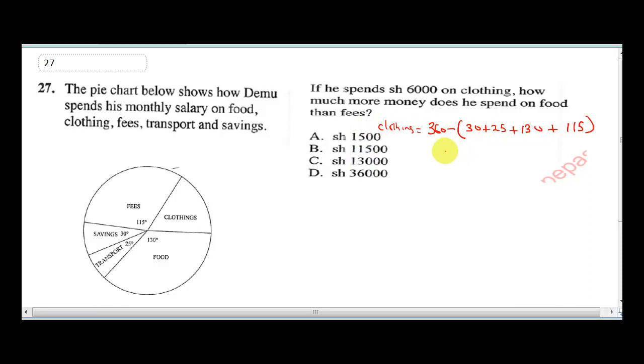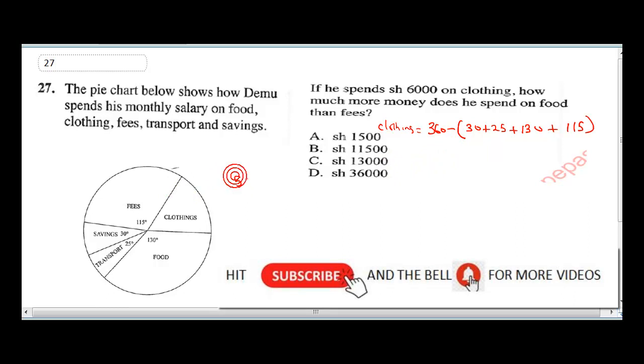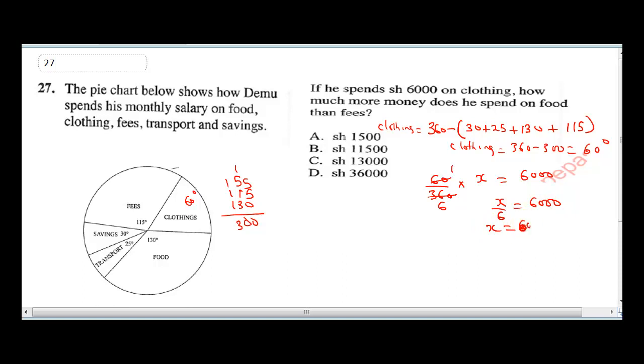So this will be 30 plus 25 gives us 55, plus 115 plus 130, this will be 300. So clothing alone will be 360 minus 300, and that will give us 60 degrees. Now to get the total money he had for his budget, 60 over 360 multiplied by the total amount gave him 6000. So 60 here is one into 360 will be six, so x over six equals 6000. His total money was 6000 times six, and that was 36,000 shillings.